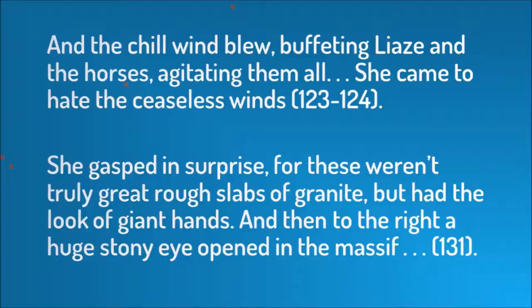Here's how McKiernan does that. He describes the wind as: '...and the chill wind blew, buffeting Laez and the horses, agitating them all. She came to hate the ceaseless winds.' Here the ever-present wind is the kind of mental challenge that erodes a person's resolve. It is unpleasant and inescapable and something that can only be endured, not overcome. This is an obstacle.